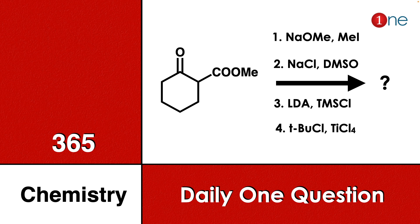Welcome to One Chemistry — this is the 365 Chemistry Series, daily one question for you. Here you have cyclohexanone with a side chain ester. You're reacting with sodium ethoxide and methyl iodide, then using NaCl and DMSO. Further, you're using LDA and TMS chloride, then tert-butyl chloride and titanium tetrachloride. You have to guess what will be the final product.